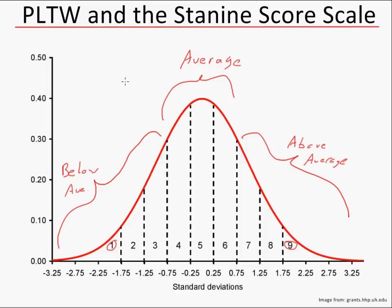As I mentioned in the previous video, I'm assigning verbal scales to a numerical scale. So 1s, 2s, and 3s are below average or below proficient. 4s, 5s, and 6s fall into the average group, and then 7s, 8s, and 9s fall into the above average group.